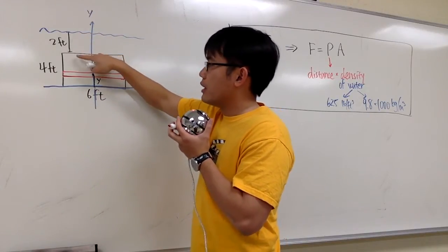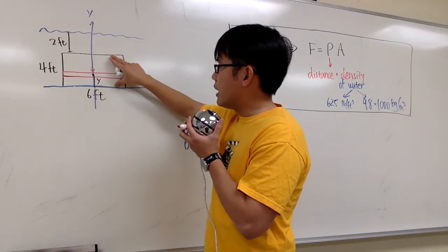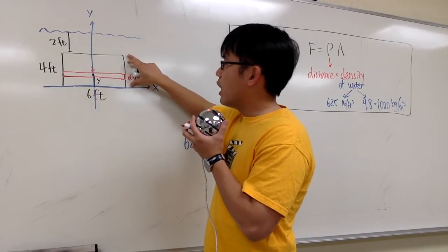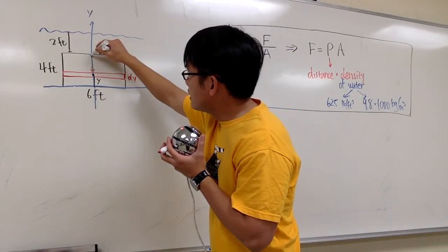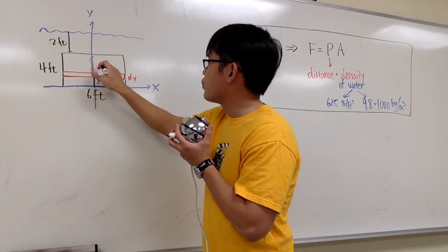Here is 2. Here is 4. If you look at the rectangle only, the whole thing is 4. This much is y already. That means this much will be 4 minus y.